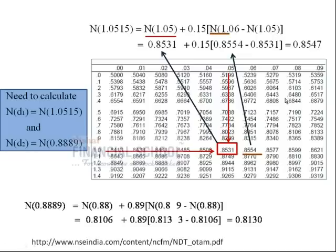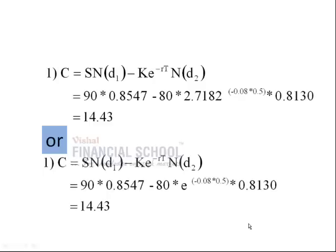Before you solve N(d2), I'll show you. It is the same method that we take. 0.8889 lies between 0.88 and 0.89. Using the same method that we calculated, you get N(d2) value as 0.8130.